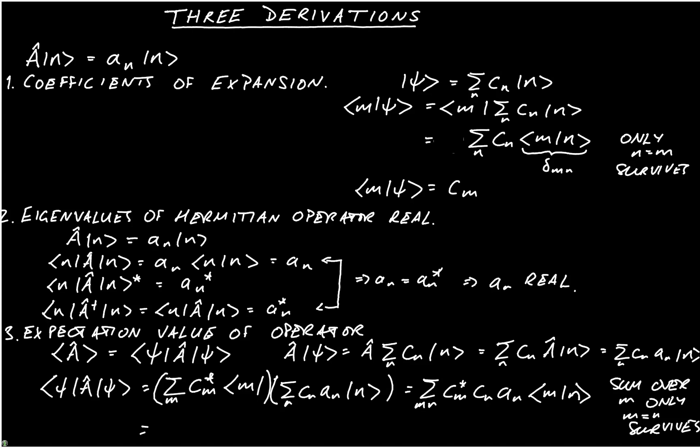So now we see that we have a sum over n of c_n* c_n a_n, which is just the sum over n of the square modulus of c_n multiplied by a_n, which is the result we derived in lectures.